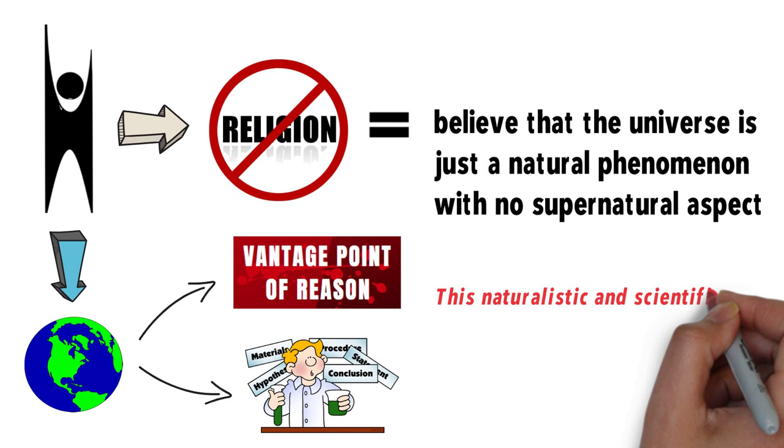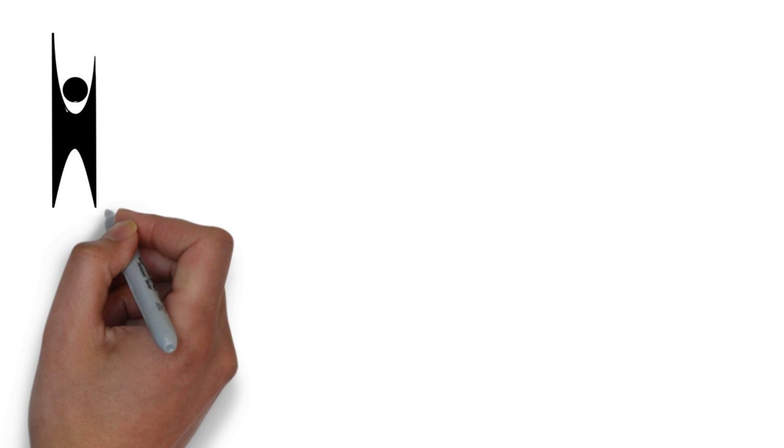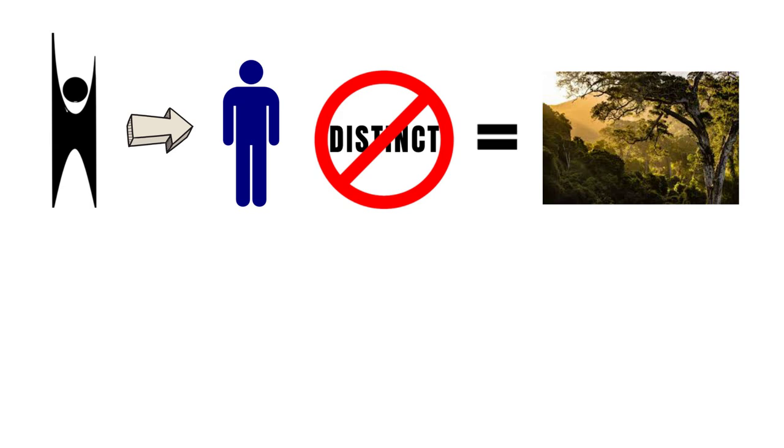This naturalistic and scientific view of the world has deep implications in how the humanists view the human person. On the one hand, the humanists see the human person as not distinct from the rest of nature.